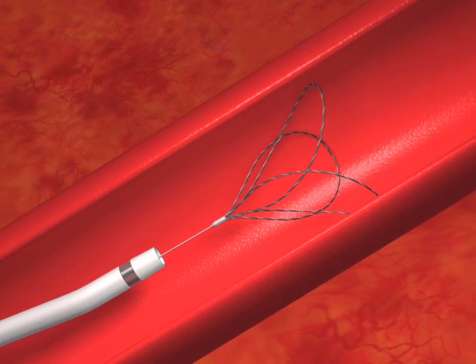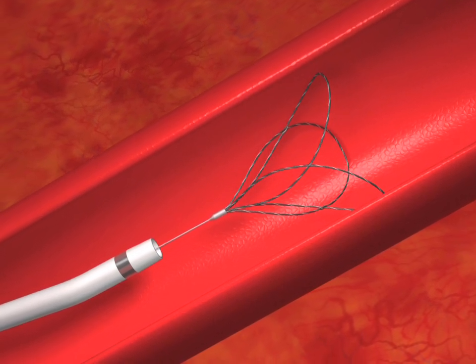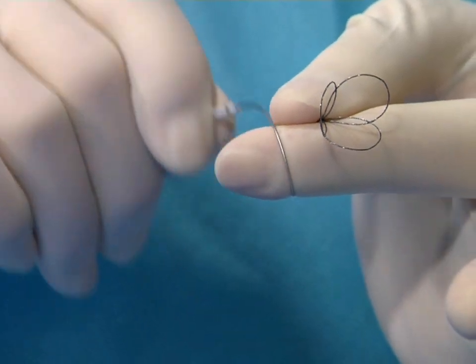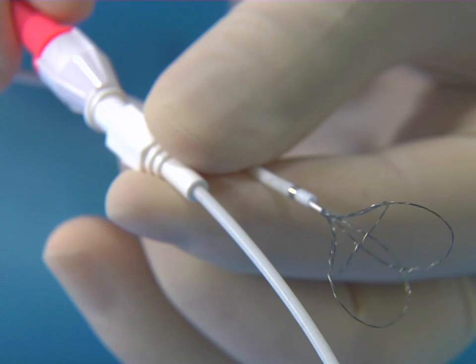The snare loops are constructed of super elastic nitinol wire providing flexibility, kink resistance, and superior one-to-one torque control.